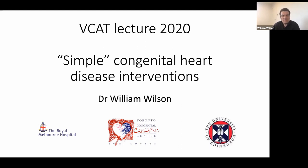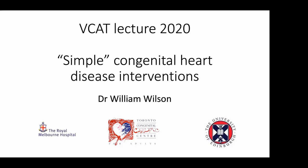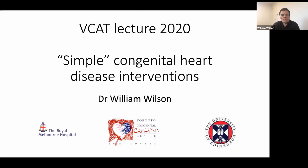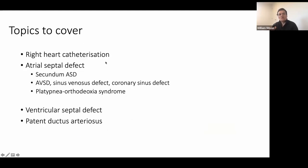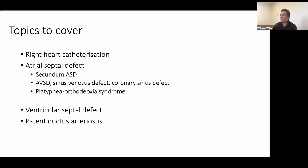I'm largely talking today about what I've called simple congenital heart disease interventions. That means I'll focus on briefly what's involved in a right heart cath, then ASDs — the bulk of the time will be spent on ASDs, whether it be secundum ASD, AVSD, or sinus venosus defect. I'll touch on platypnea orthodeoxia syndrome, then spend time on VSD and PDA as it pertains to devices, and explore the anatomy and physiology around these.